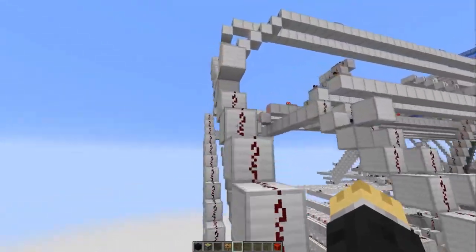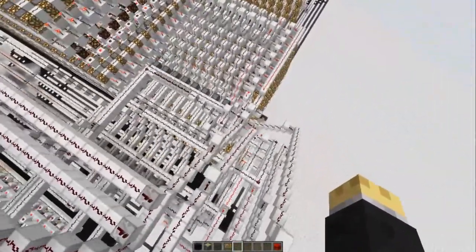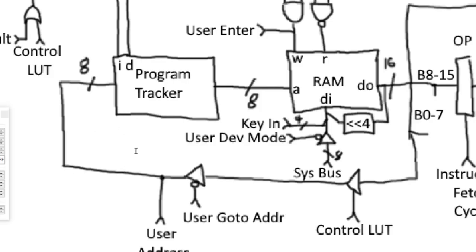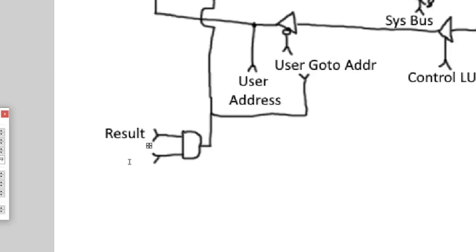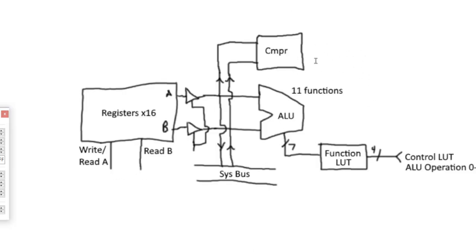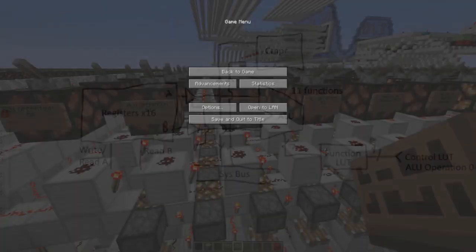I should probably denote that — disabled. So this one's the user. And of course I've run out of room here, so we'll just call it fifth cycle for now. This other signal is an OR between flag result and control lookup. This one's the jump. Really not sure where to put the signal here because we're running out of room. I know this is super messy, but we're going to roll with it anyway — I'll clean it up later.